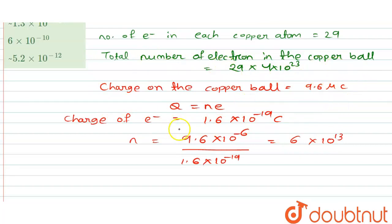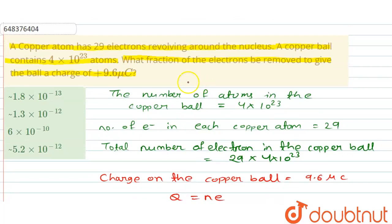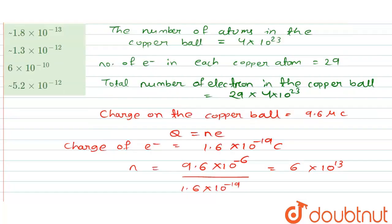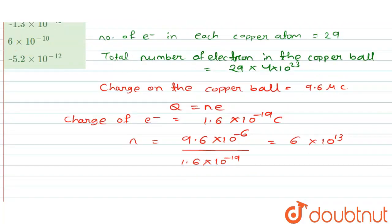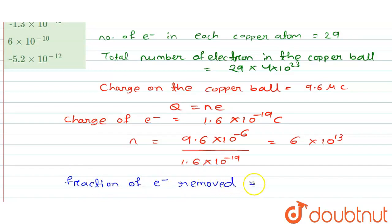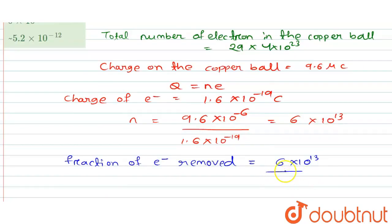The question asks for the fraction of electrons removed — that is, the electrons removed as a fraction of the total number of electrons already present in the copper ball. The fraction of electrons removed is equal to 6 × 10¹³ divided by 29 × 4 × 10²³.